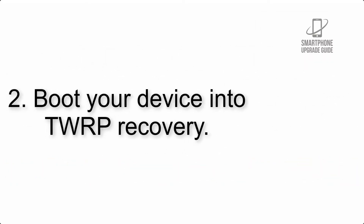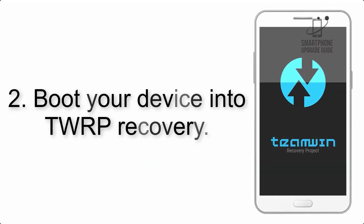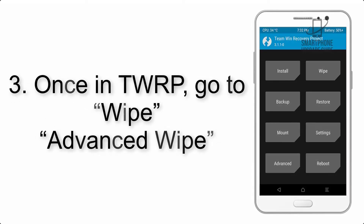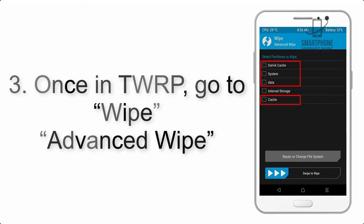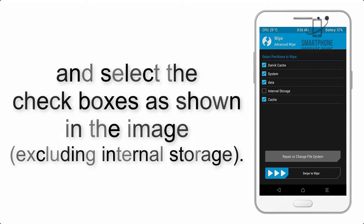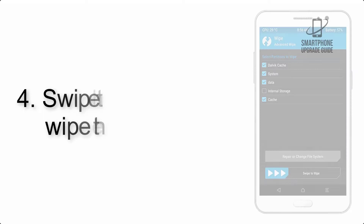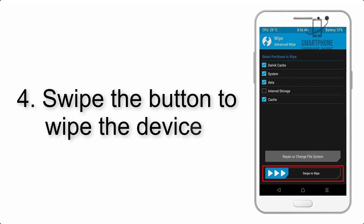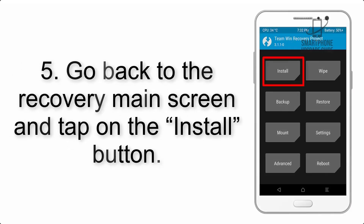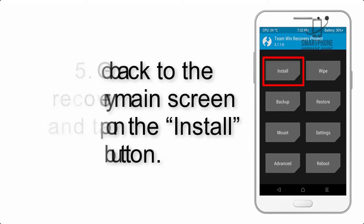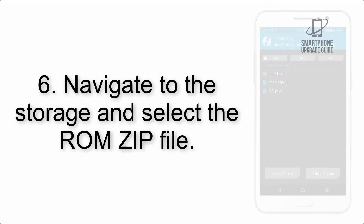Step 2: Boot your device into TWRP recovery. Once in TWRP, click on Advanced Wipe and select the checkboxes as shown in the image, excluding internal storage. Step 4: Swipe the button to wipe the device.